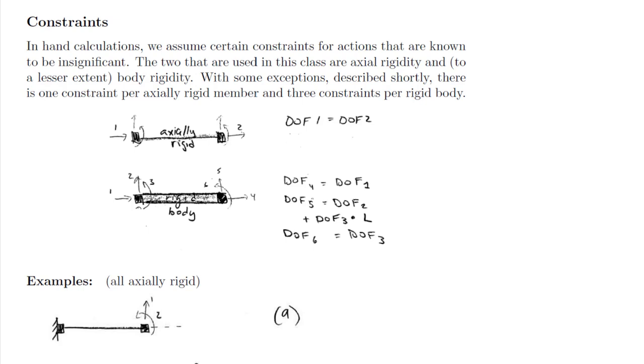As we see here in the figure, degree of freedom 1 and degree of freedom 2 are linked. If I move degree of freedom 1 to the right and the member is axially rigid, degree of freedom 2 must move to the right as well.